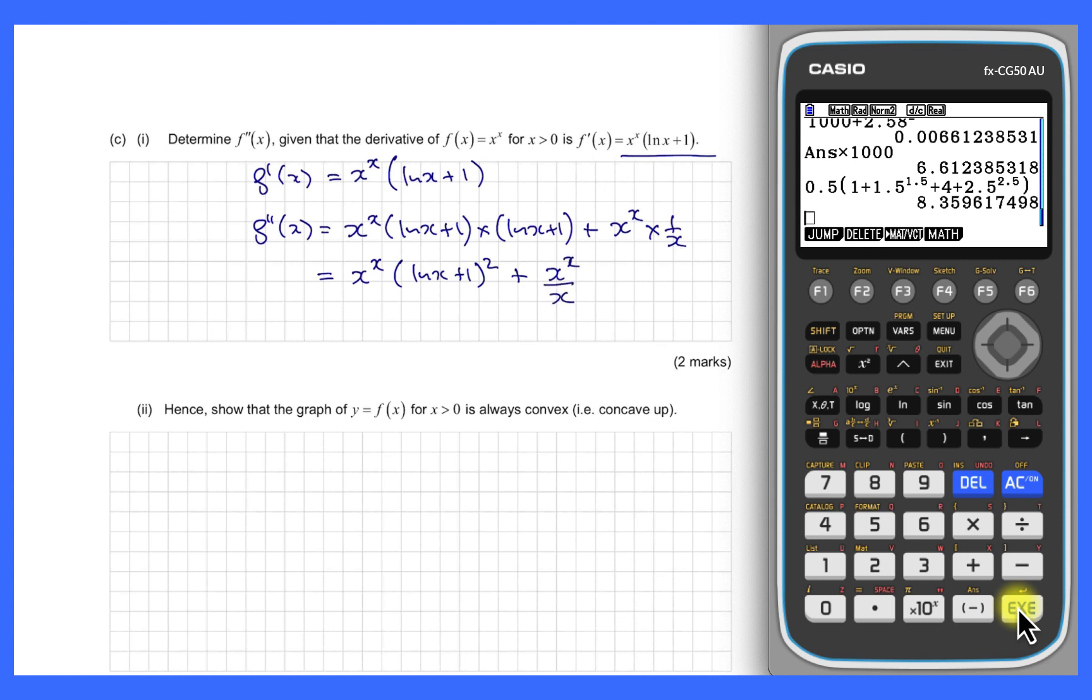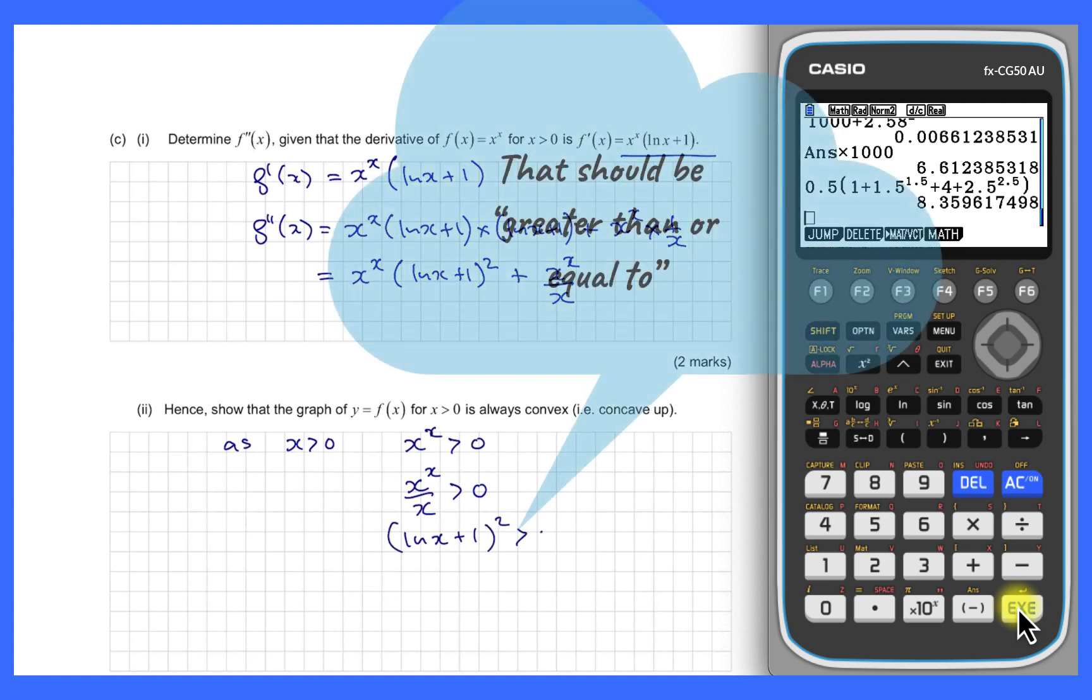With that in tow, I can now tackle part c2, which is to show that this function is always convex, or is always concave up. That means we need to show that the second derivative is always positive. So let's start with the fact that as x is greater than 0, what are the components of f double dash x? We know that if you take a positive number to a positive power, you're going to get a positive result. So we know that's a fact. We also know that x to the x over x, that same term divided by a positive number, will be positive.